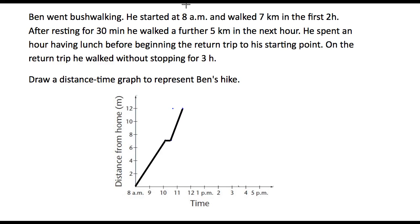We draw the line up to there. Does he go any further? He spent an hour having lunch — there's another horizontal line. So it's 11:30 to 12:30; let's mark on 12:30 — there's 11:30, there's 12:30, about there. There's your one hour, so once again a horizontal line to indicate that he was stopped.